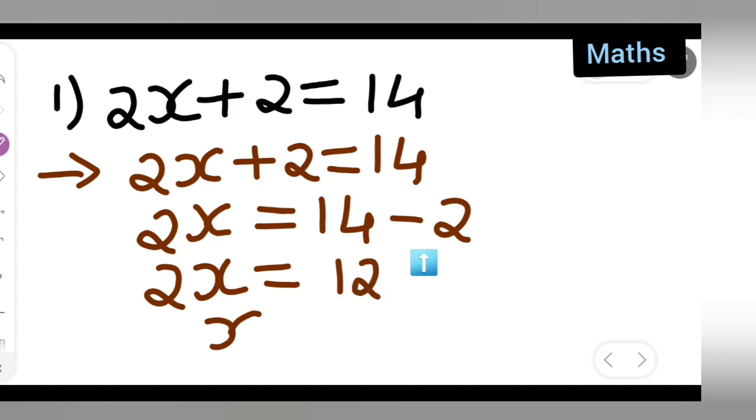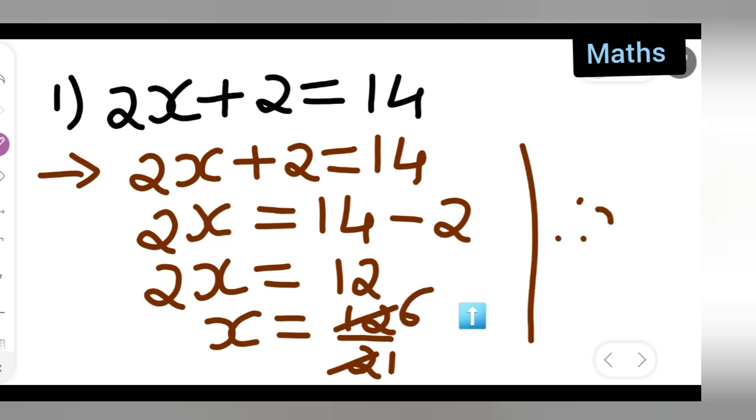So x equals, you can write down 12 upon this 2 will come down. Then you can cancel: 2 ones are 2, to 6 are 12. Therefore, the value of x equals 6.